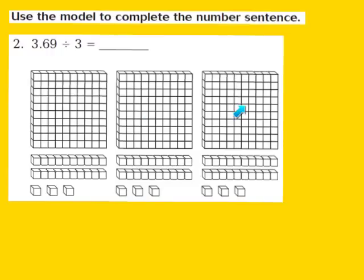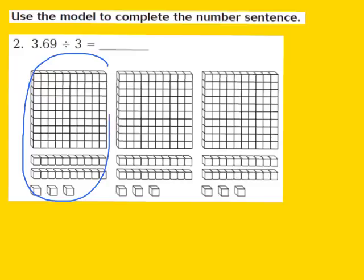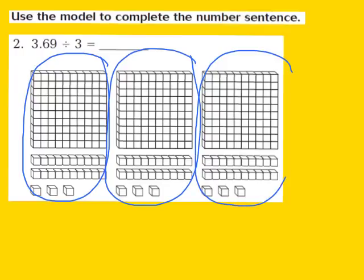We have 1, 2, 3 to represent the 3 in the ones place. We have 1, 2, 3, 4, 5, and 6 to represent the 6 in the tenths place. And then we have 1, 2, 3, 4, 5, 6, 7, 8, 9 to represent the 9 in the hundredths place. Step 2 says draw circles to represent the divisor. Our divisor is 3, so I'm going to draw 3 circles. What's nice is I can evenly divide 3 wholes, 6 tenths, and 9 hundredths by our divisor, which is 3.